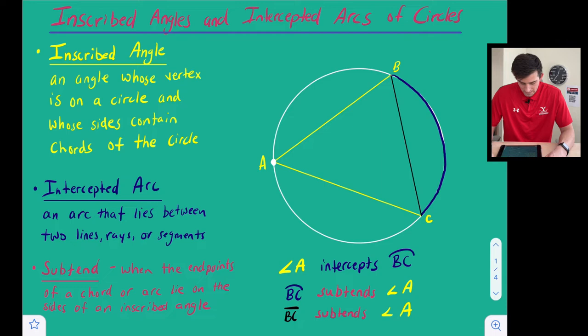Next we have an intercepted arc which is just an arc that lies between two lines, rays, or segments. So here would be our intercepted arc which is arc BC.